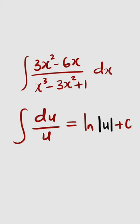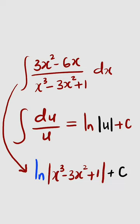And hence, if you integrate this function, you're going to obtain the natural log of the absolute value of x to the power of 3 minus 3x squared plus 1, plus the constant of integration.